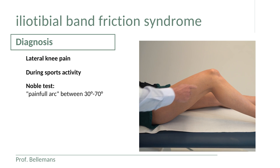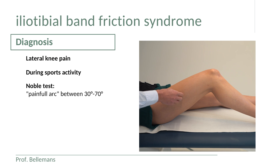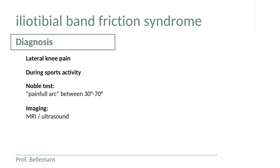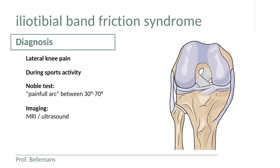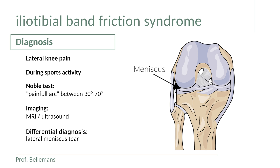The symptoms of ITB friction syndrome are usually vague pain over the lateral side of the knee. The patient often cannot pinpoint the exact location, and there may be irradiation proximally or distally. The pain typically occurs during training or competition after the athlete has already covered quite some distance, seldom immediately at the start. Because the pain is rather vague, other pathology on the lateral side must be excluded, most importantly a lateral meniscus tear, which can produce similarly nonspecific pain.